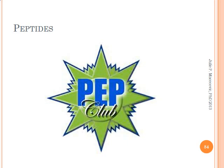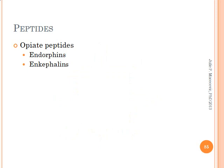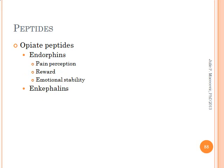Last on my list of important neurotransmitters are the peptides, which are small proteins or chains of amino acid molecules attached in a particular order. One important group of peptides is the opiate-type peptides — the endorphins and enkephalins. Endorphins may be involved in a wide variety of emotional states: pain perception, reward, emotional stability, and energy highs. Opiates such as morphine, codeine, and heroin activate opiate receptors.